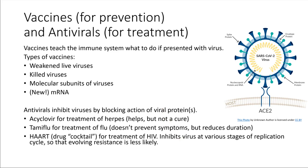Vaccines are primarily for preventing an infection from ever happening — that's ideal; we want to prevent it from ever happening in the first place rather than deal with it after the fact. There are a few different types of vaccines. Some vaccines are literally just weakened live viruses: they take a sample of a virus, grow it in the lab, and induce mutations so it's not as strong. If they infect somebody with this weakened virus, the person gets infected but doesn't develop any disease symptoms — it's a really weak virus. That's not a real common method of vaccination.